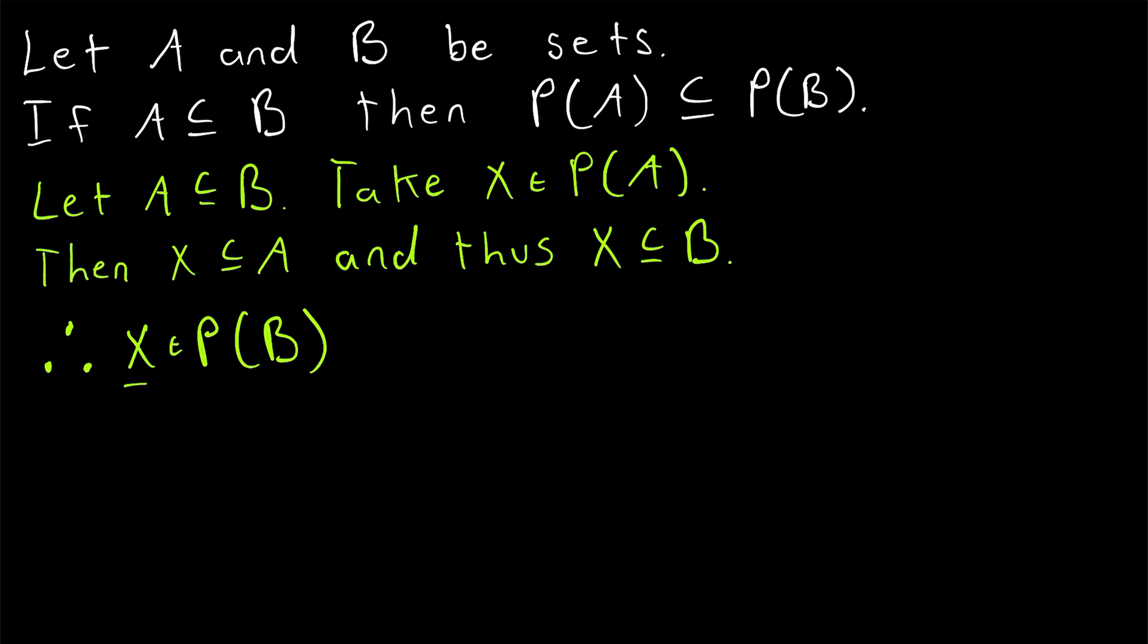And since X was just an arbitrary element of the power set of A, this shows that every element of the power set of A is an element of the power set of B, and thus we have shown that the power set of A, by definition, is a subset of the power set of B.